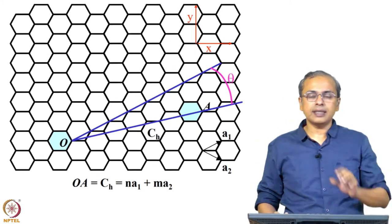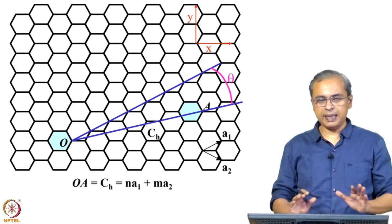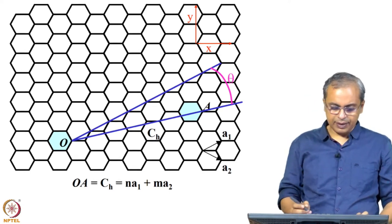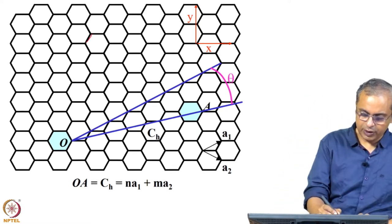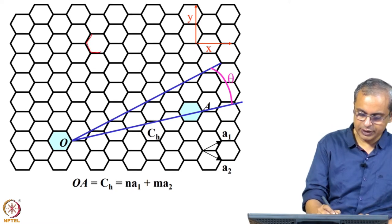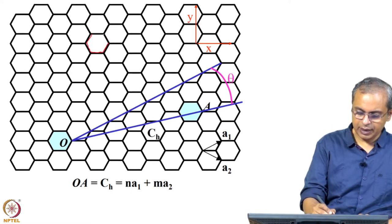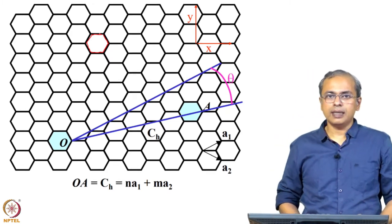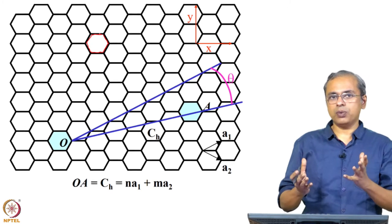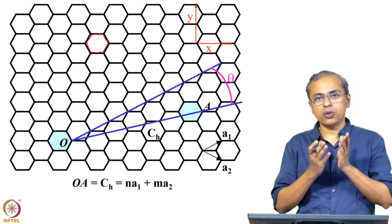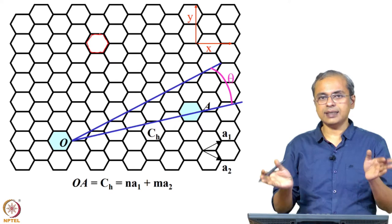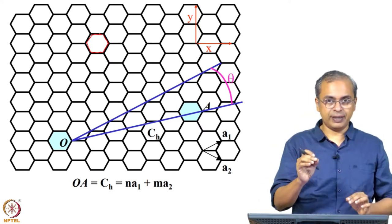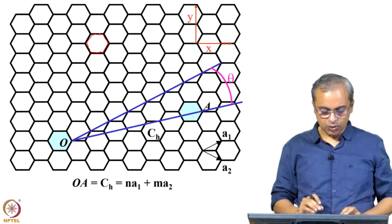Knowing what the chirality of the nanotube is and putting some numerical value to it gives us a better way of describing and understanding the nanotube. Therefore we will spend some time figuring out how this structure relates to the nanotube. What you see here is a graphene sheet — all hexagonally bonded carbon atoms — and we will derive things based on this.